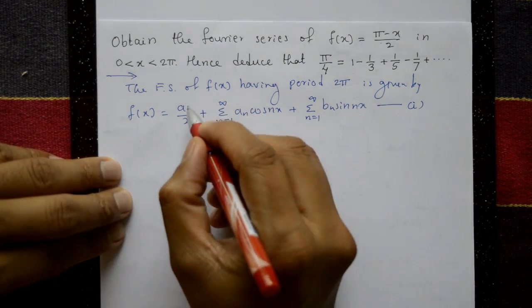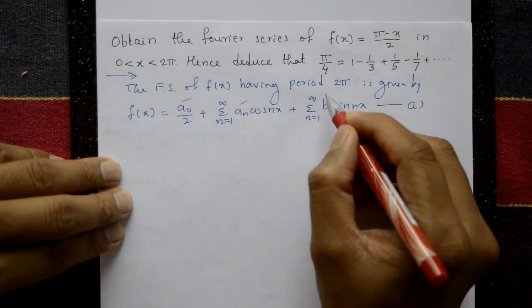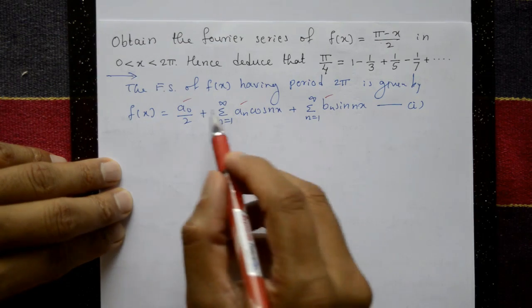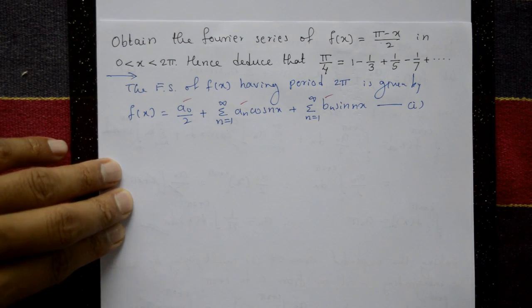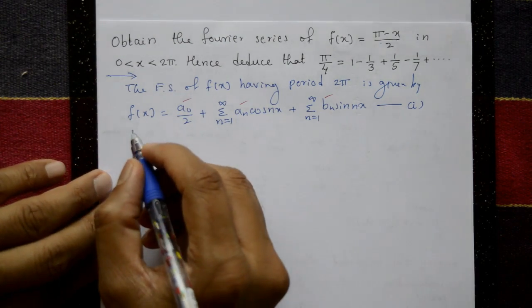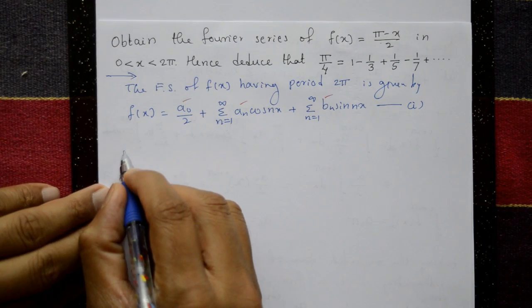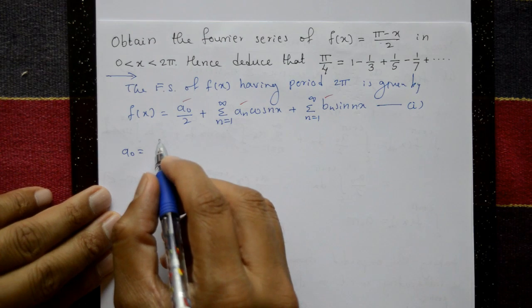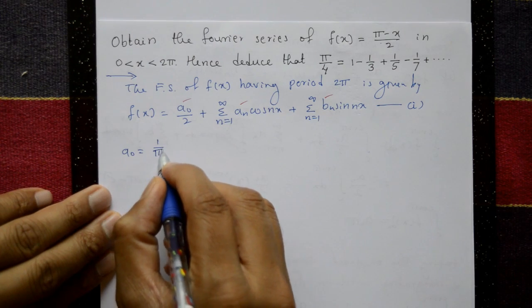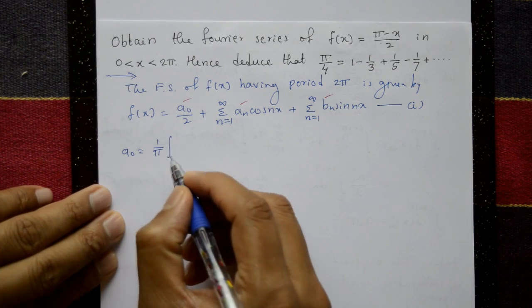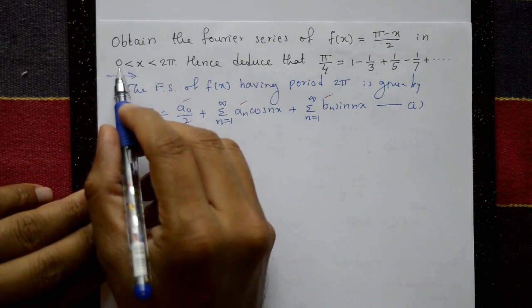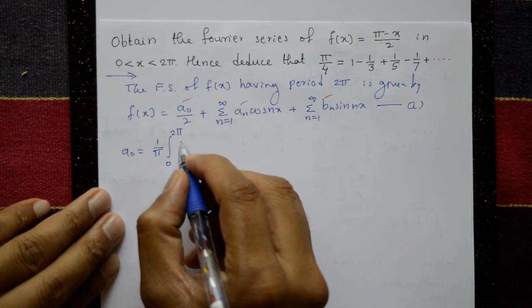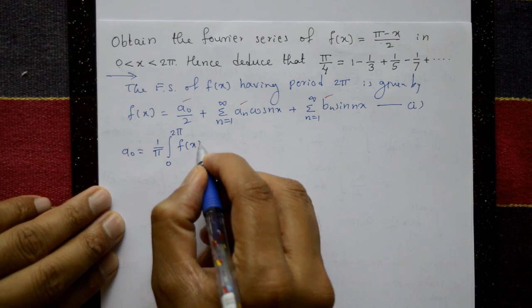We need to find a₀, aₙ, and bₙ and substitute into equation number 1. The formula for a₀ is: a₀ = (1/π) × integration from 0 to 2π of f(x) dx.